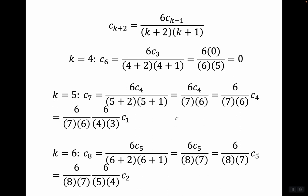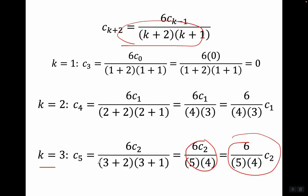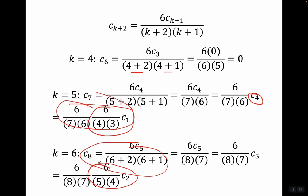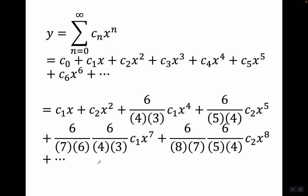Continuing: plugging in k equals four gives c sub six equals six c sub three over six times five. But c sub three was zero, so c sub six equals zero. Plugging in k equals five gives c sub seven equals six c sub four over seven times six. Since c sub four equals six over four times three times c sub one, we express c sub seven entirely in terms of c sub one. Similarly, plugging in k equals six gives c sub eight in terms of c sub five, which we express in terms of c sub two. And k equals seven gives c sub nine equals six c sub six, which is zero since c sub six was zero. The pattern becomes clear.